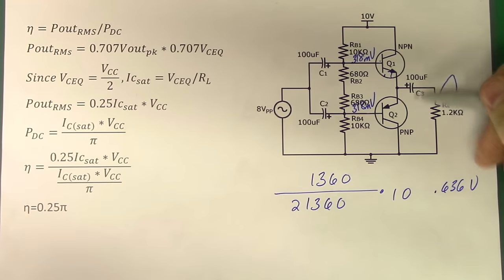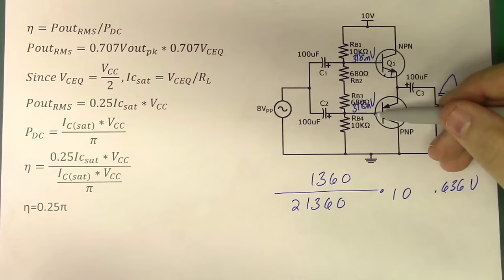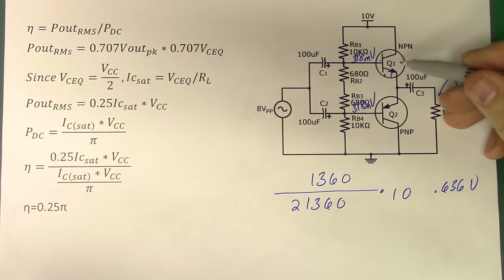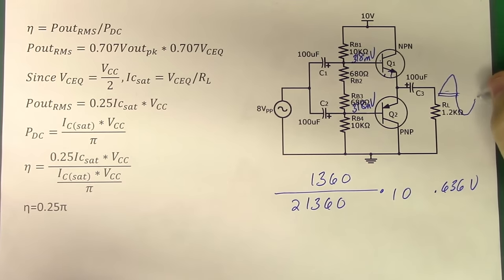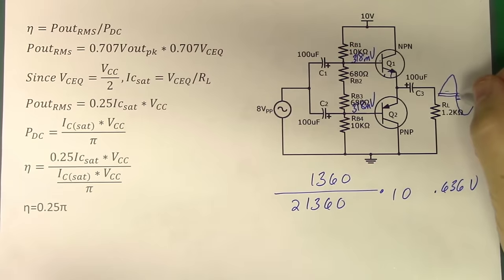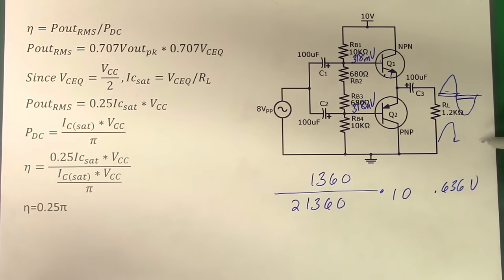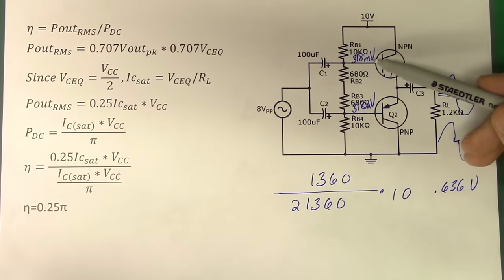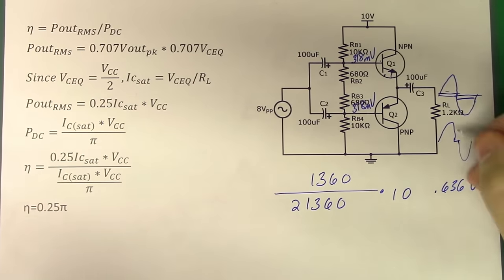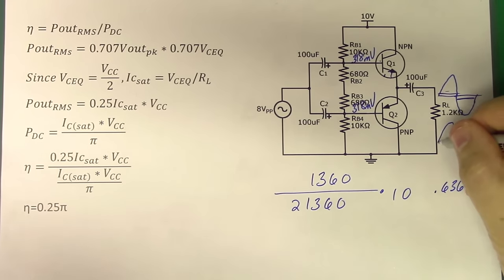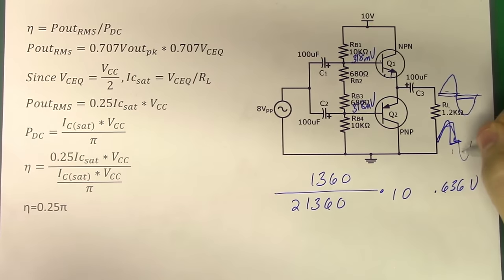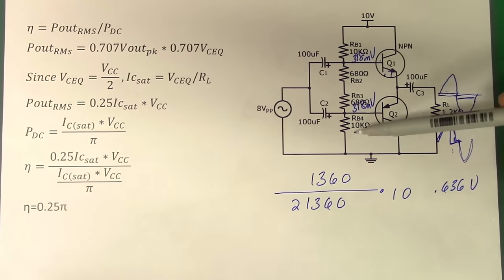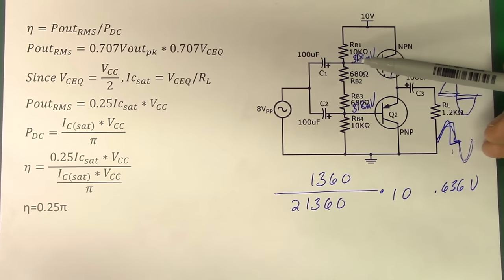The same is going to be true on the next alternation. When the signal goes negative, Q2 gets biased on, Q1 is off, we get the negative portion of the signal, and again we're going to lose about 400 millivolts. If I had not put this bias value in, the missing part of the signal would have been even greater — we'd have lost more of the original signal, so fidelity goes down. The problem with adding these biasing resistors is that it really impacts efficiency. Biasing resistors make efficiency go down, but they improve the fidelity.